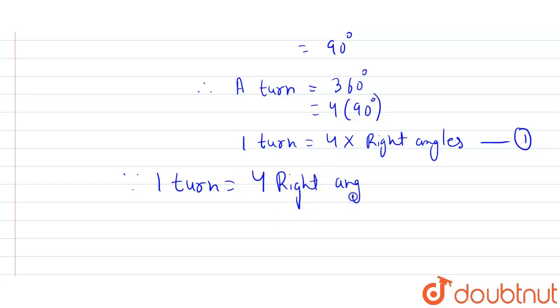Therefore, 4 turns will be how many right angles? So 4 into 4, which is 16 right angles.